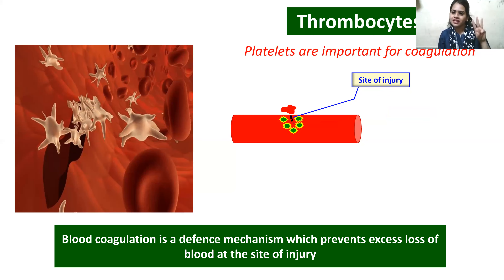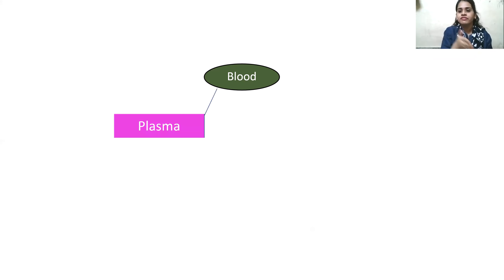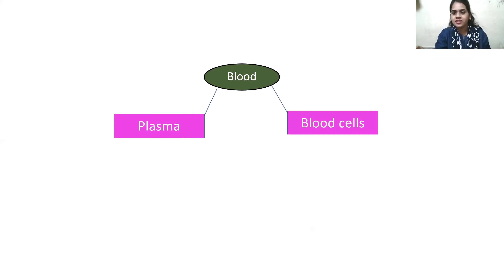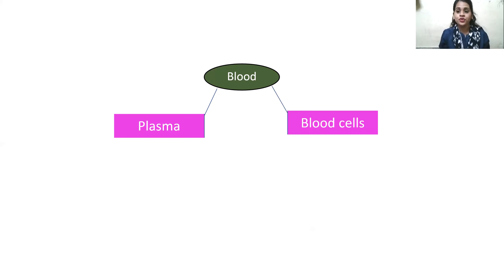So these are the three different cells — RBCs, WBCs, and platelets. Let us revise once again. Blood is made up of two important things: plasma, which is around 55%, and blood cells, which is around 45%. Plasma consists mainly of water — 90 to 92% — and the remaining are solutes. Blood cells are of three types: erythrocytes, leukocytes, and thrombocytes. This is all about blood. I hope you have understood. Thank you, everybody.